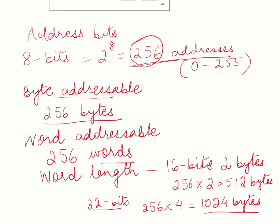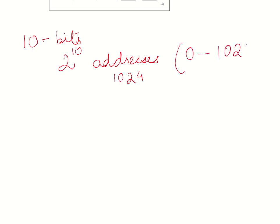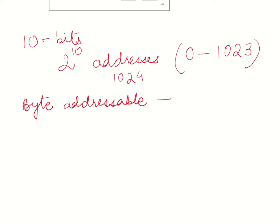So this is the maximum memory that I can have. Let us take another example using 10 bits. If I have 10 bits in my address, then I can have a maximum of 2 to the power of 10 addresses, which is 1024. The addresses would range from 0 to 1023. If it is a byte addressable memory and each byte has an address, I can have 1024 bytes.